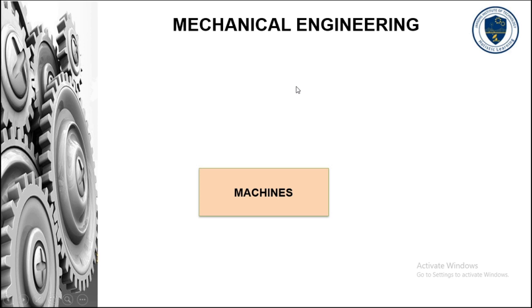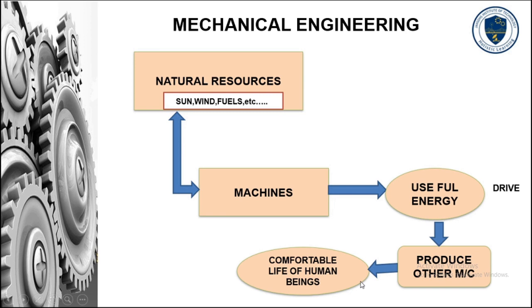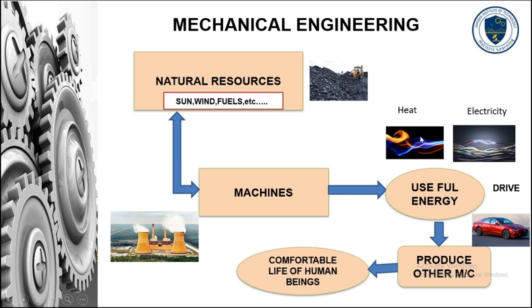Machines can convert all the available natural resources into a useful form of energy for producing other machines, which enhances the comfortable life of human beings. For example, coal is available naturally. With the help of a machine — that is, a coal-based power plant — we can extract the available energy in coal and convert it into useful forms of energy like heat and electricity. That heat and electricity are used to drive various types of machines for producing other machines like cars, aircraft, two-wheelers, and other machines.